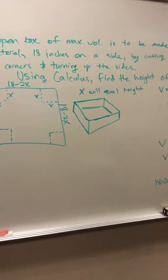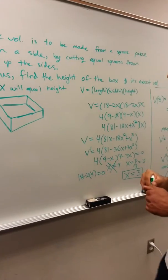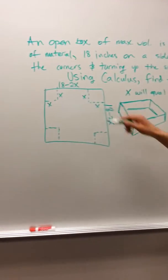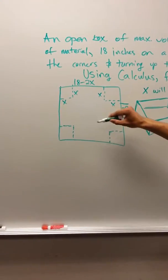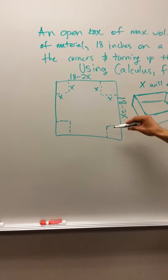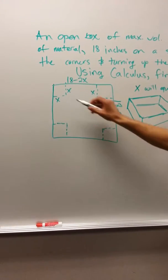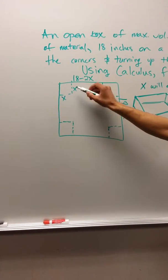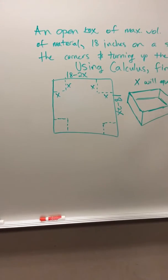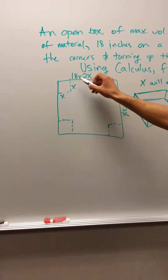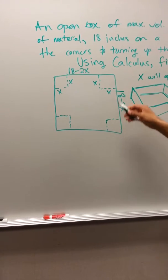I drew this out to show what we're dealing with. We have a square piece with corners that are cut out, so I labeled these x and x because our x will equal our height. Then I did 18 minus 2x and 18 minus 2x here also to represent our length and width.